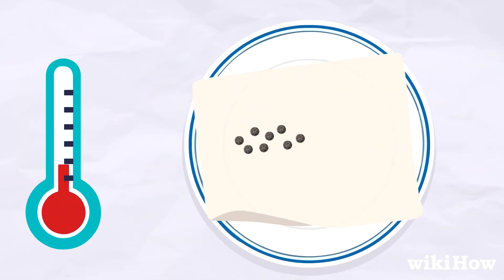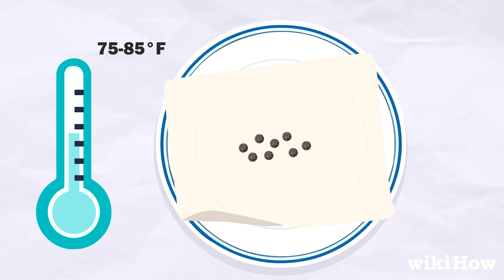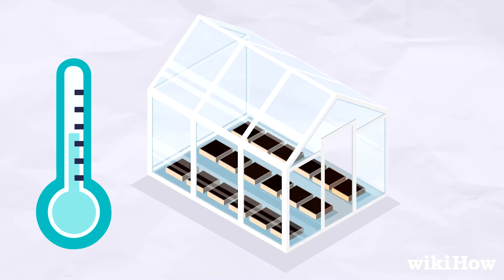Black pepper needs temperatures between 75 and 85 degrees Fahrenheit, or 24 and 29 degrees Celsius, to grow. But you can grow it indoors or in a greenhouse if you live in a cooler climate.